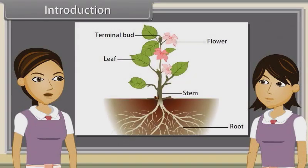When we observe a plant, we see that every plant has roots, stem and leaves. Plants also have flowers and roots. We have already discussed characteristics, types, modifications and functions of roots, stems, leaf and inflorescence. Now we will study flowers.